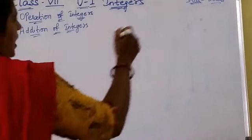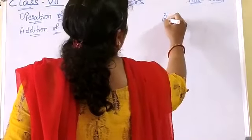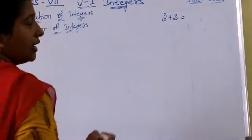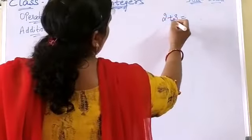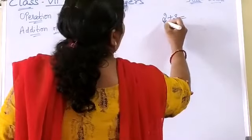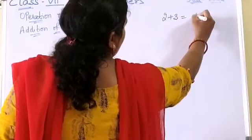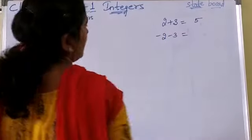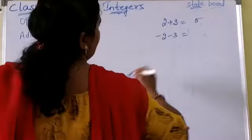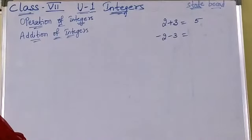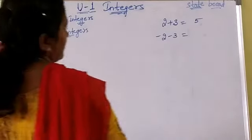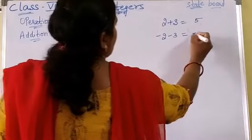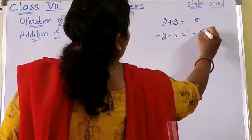In the previous class we learned that when you add 2 positive numbers, like 2 plus 3, positive added to positive means you get the normal answer — 2 plus 3 is 5. When you add 2 negative numbers, like minus 2 and minus 3, when both numbers are negative, you add and keep the minus symbol. So minus 2 plus minus 3 gives you minus 5.